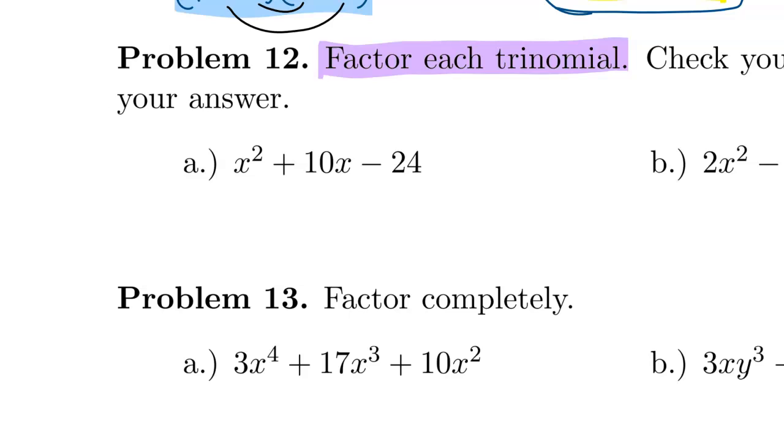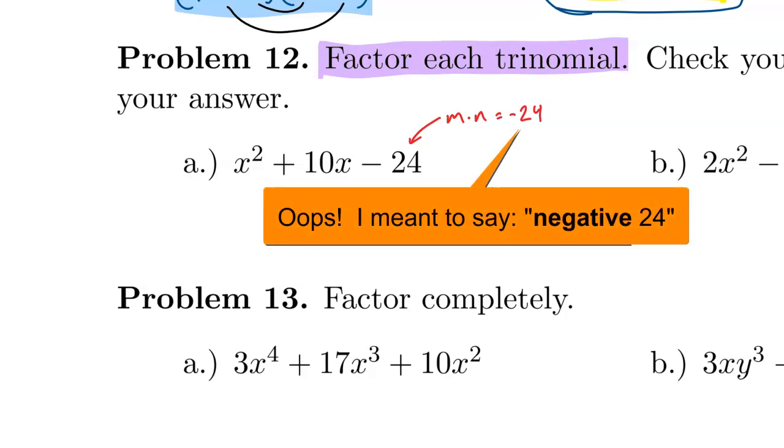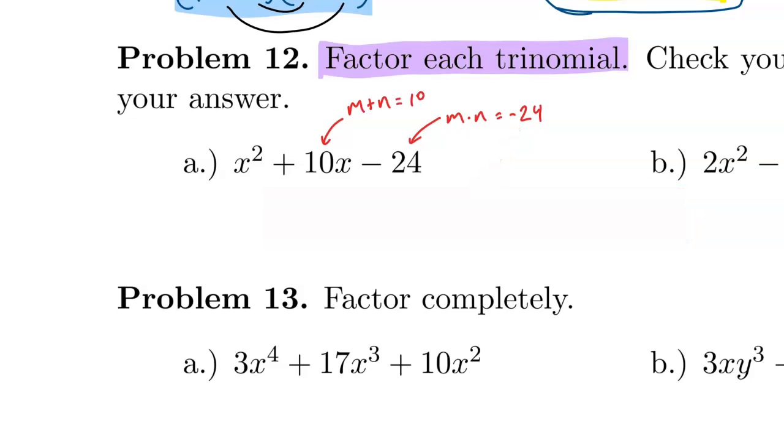We can factor this trinomial if we can identify two numbers, m and n, that multiply to equal negative 24 and add to equal 10. To help us identify these numbers, if you don't think of them right away, you can list all the factors that multiply to equal negative 24, all the nice factor pairs.